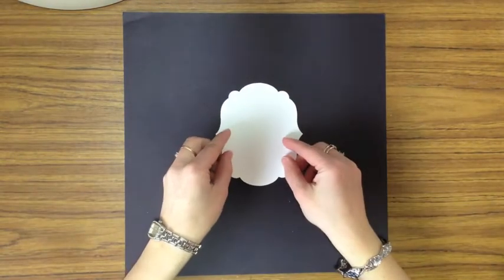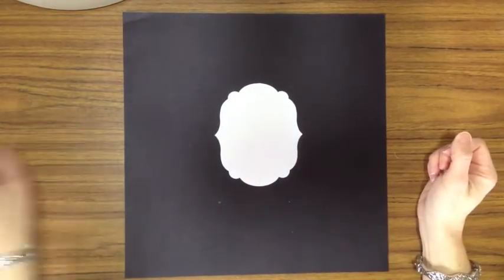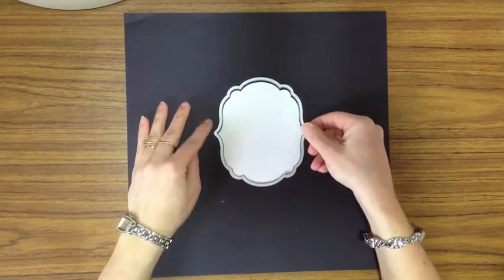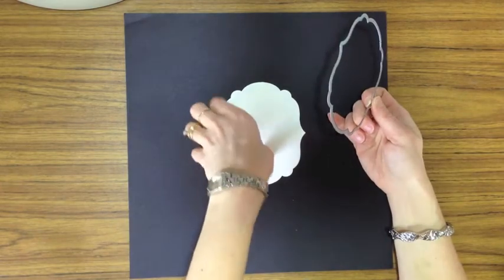The first thing I did is I took a piece of Whisper White cardstock and used my labels framelits to cut out a shape. I used the second to largest framelit to cut that out.